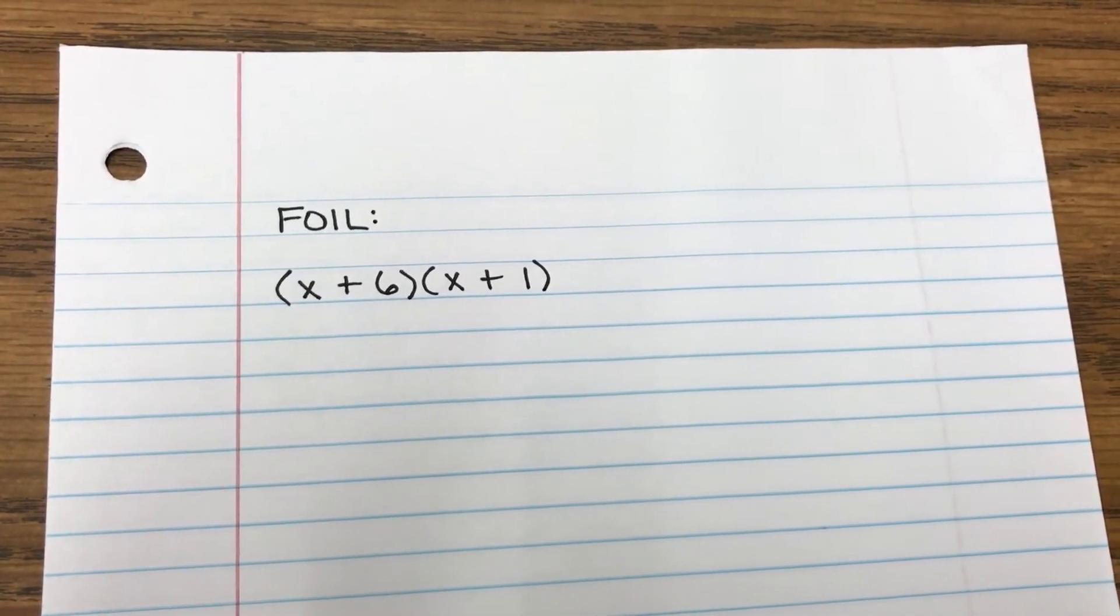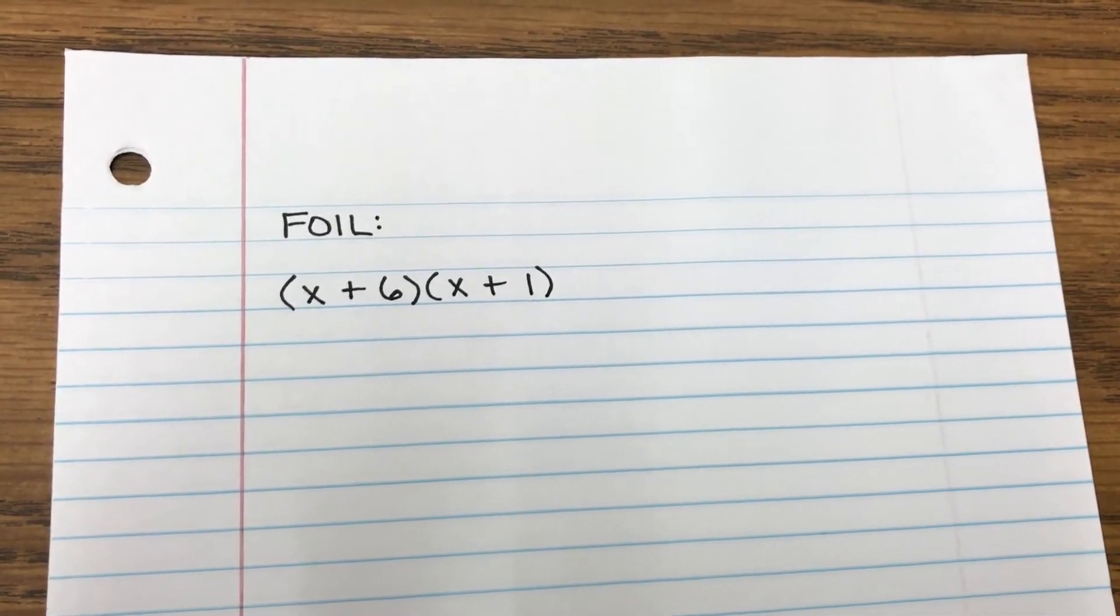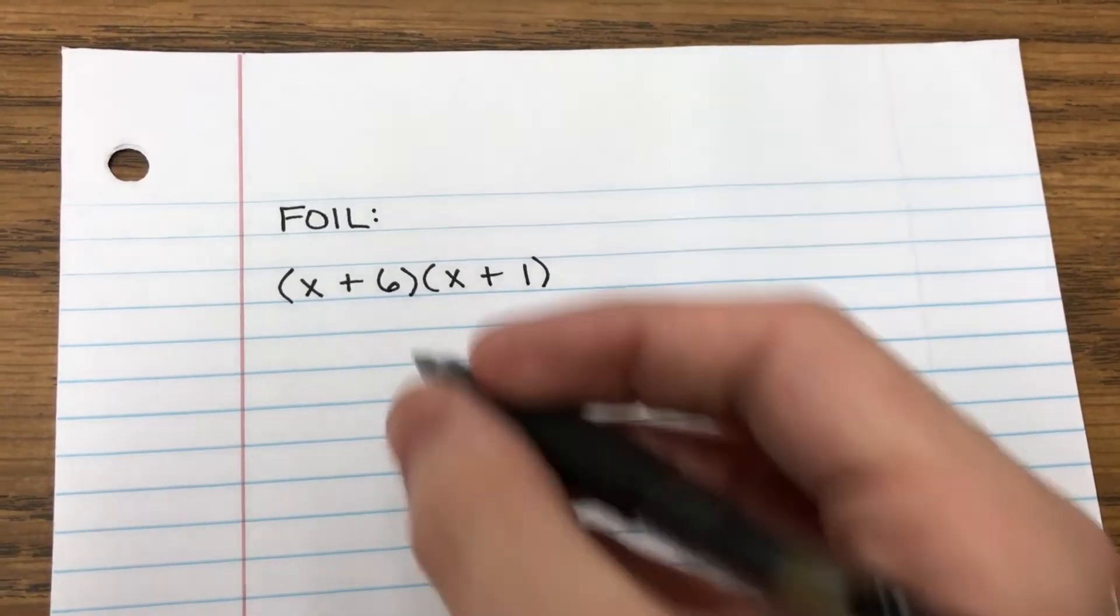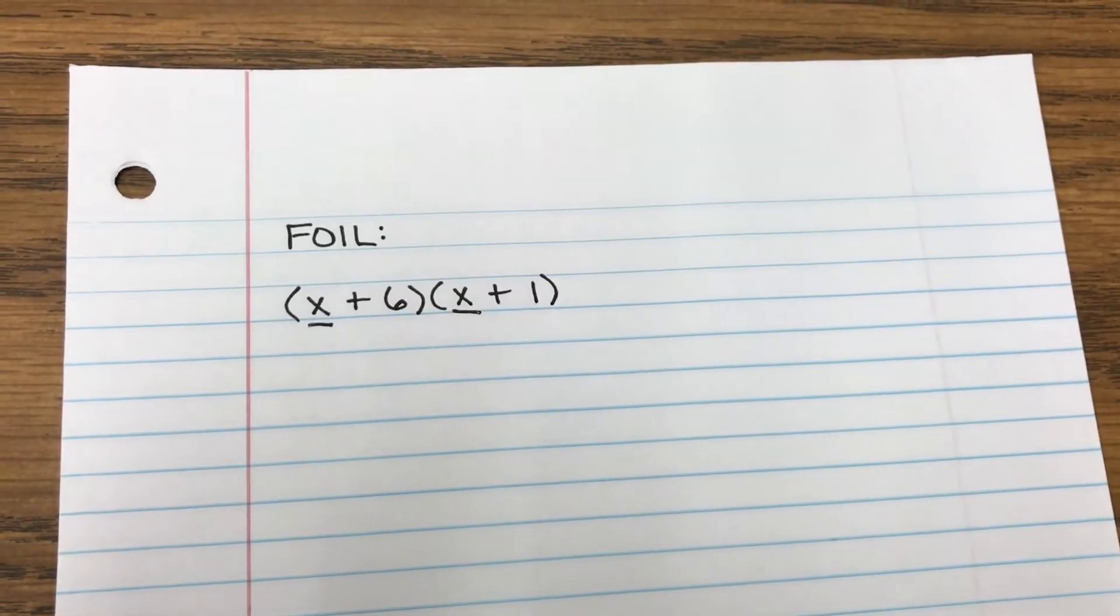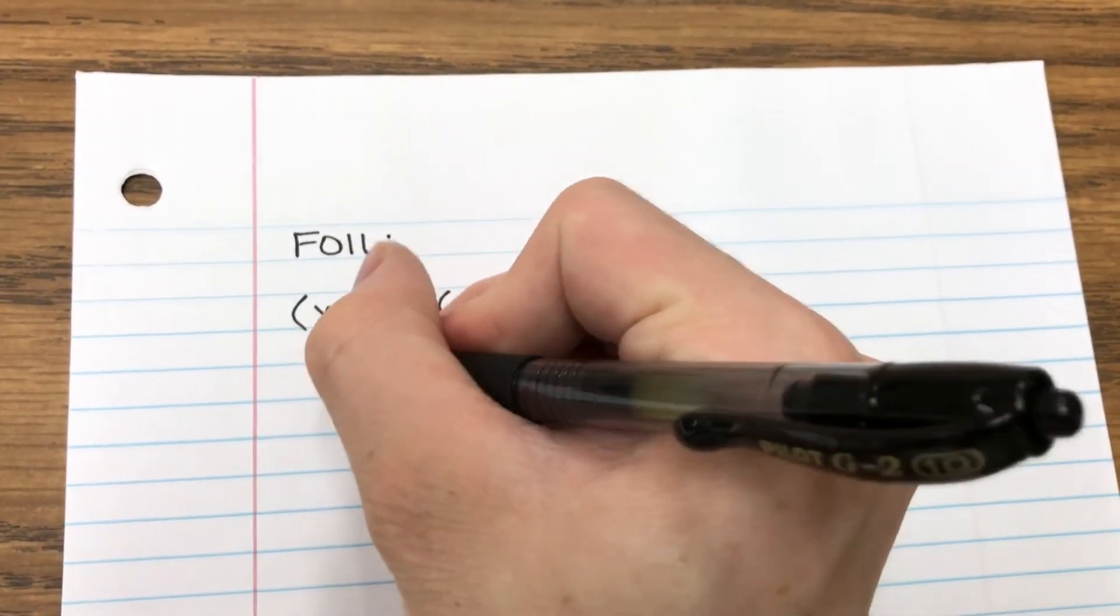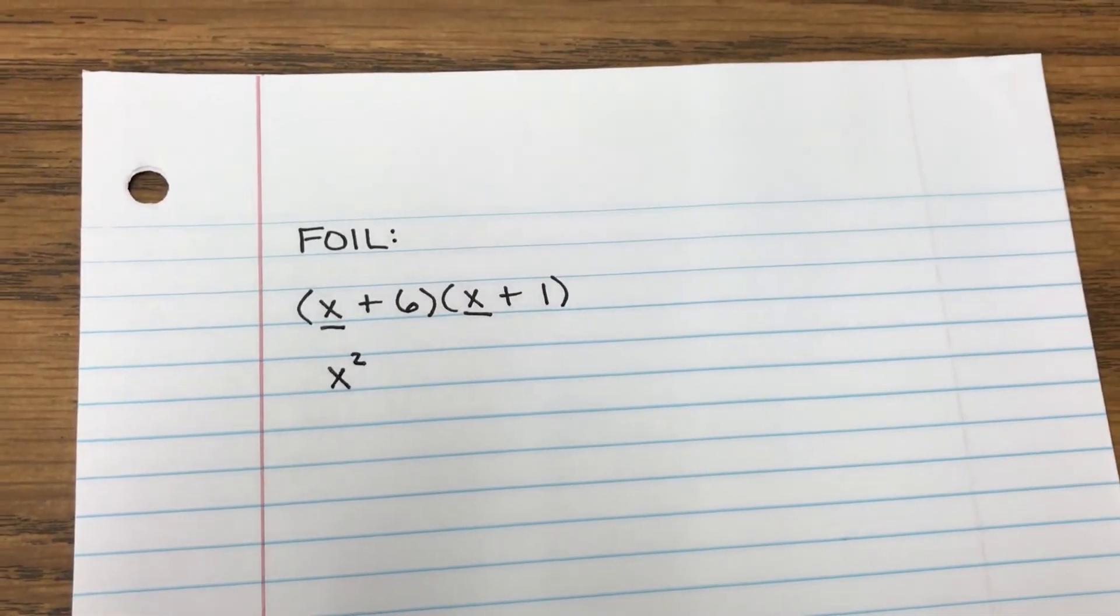First of all, you're going to look at the first letter of FOIL, which is F. That stands for first. So what I'm going to do is, I'm going to underline the first two terms right here, and we'll multiply them. So X times X is X squared.